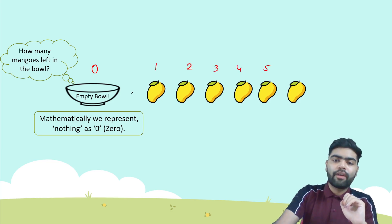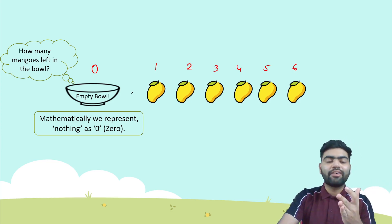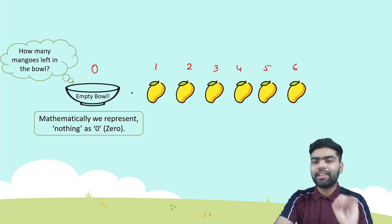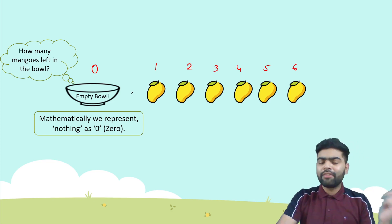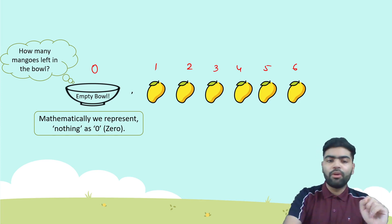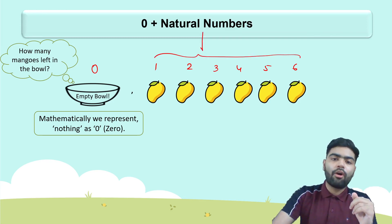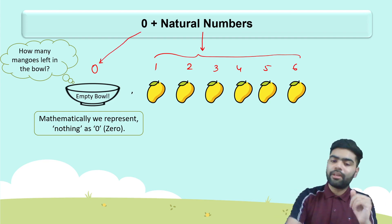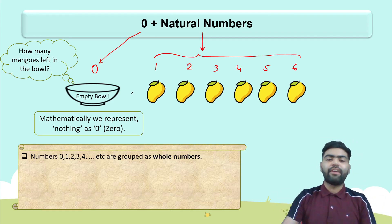So mangoes can be counted as one, two, three, four, and no mangoes is represented mathematically with zero. But in natural numbers, do we include zero? No. So we need to introduce something new — zero along with all the natural numbers.